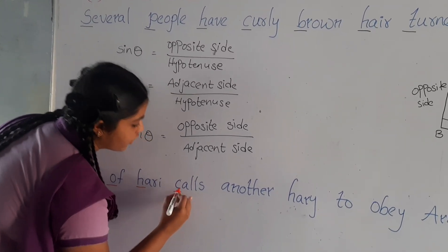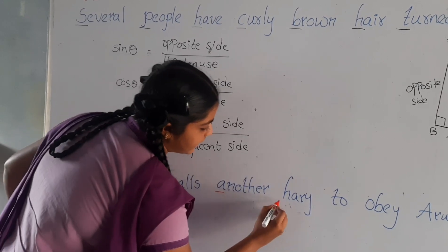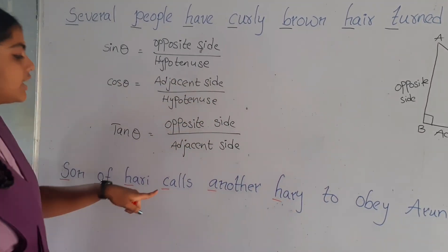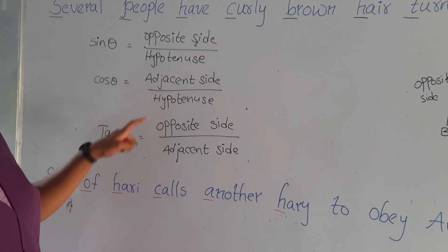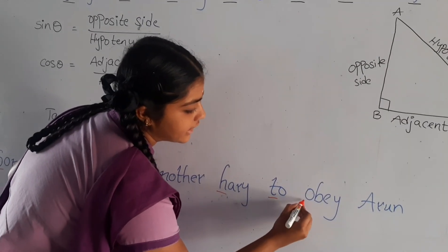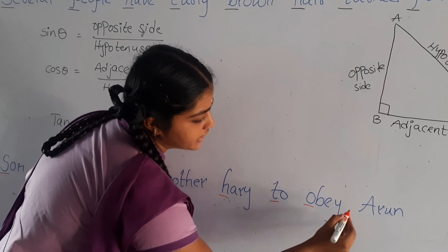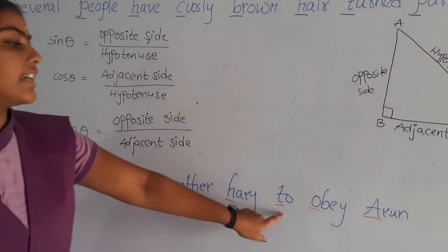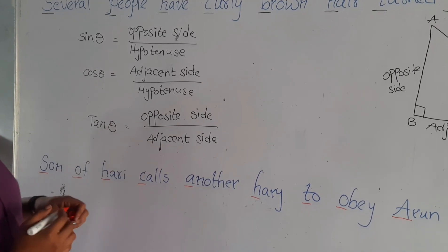C stands for cos theta, A stands for adjacent side, and H stands for hypotenuse — so cos theta is equal to adjacent side by hypotenuse. T stands for tan theta, O stands for opposite side, and A stands for adjacent side — so tan theta is equal to opposite side by adjacent side.